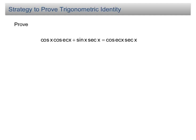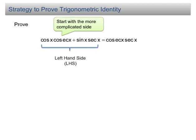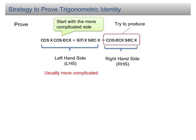When you have to prove trigonometric identities, usually the best strategy is to start with the more complicated side — for example, the left-hand side — and try to produce the expression on the other side. If you have expressions such as secant θ, cosecant θ, tangent θ, and cotangent θ, you can always change these expressions in terms of sin θ and cos θ only.